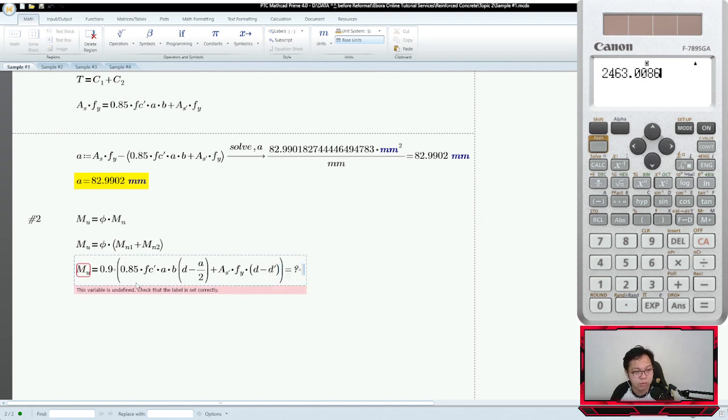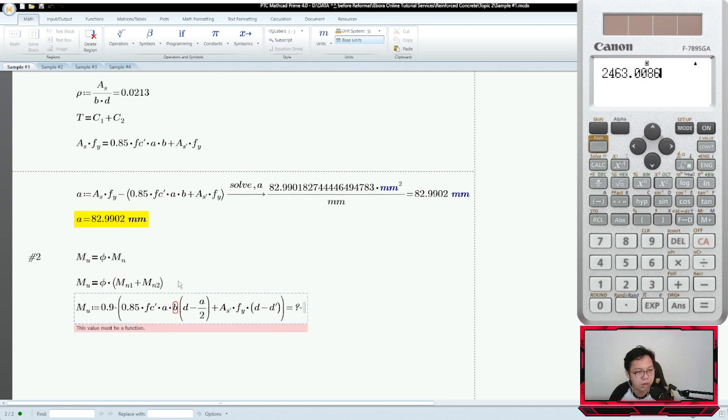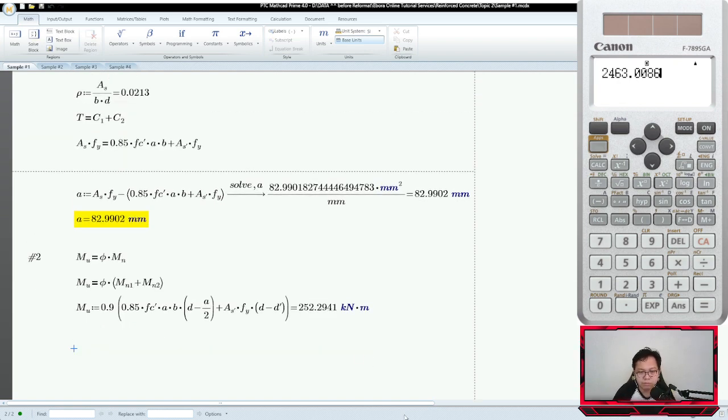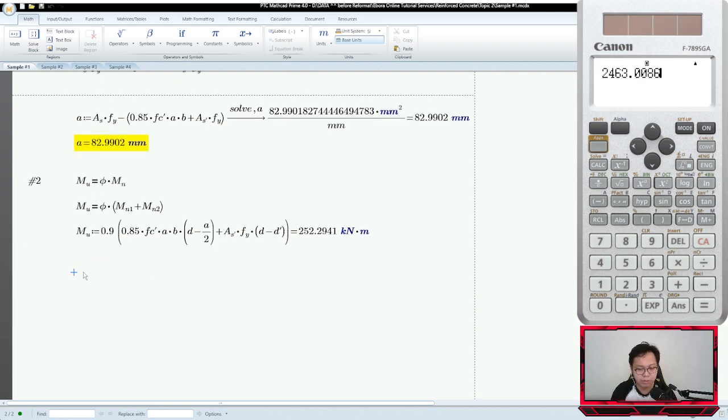So you have your MU. We want the unit in kilonewton meter. Check if we get the same answer: 252.2941. Let's proceed to number 3.